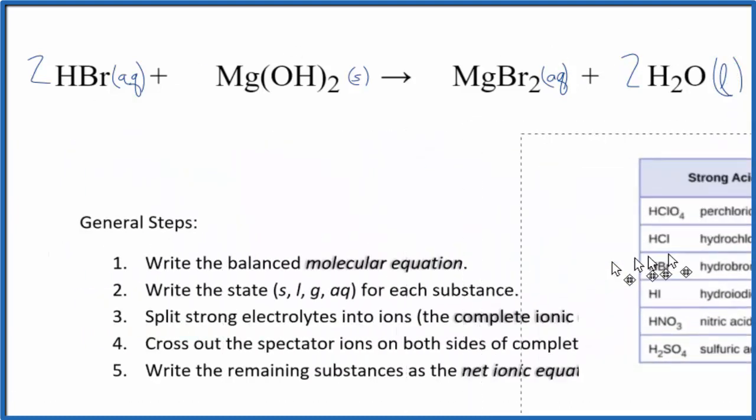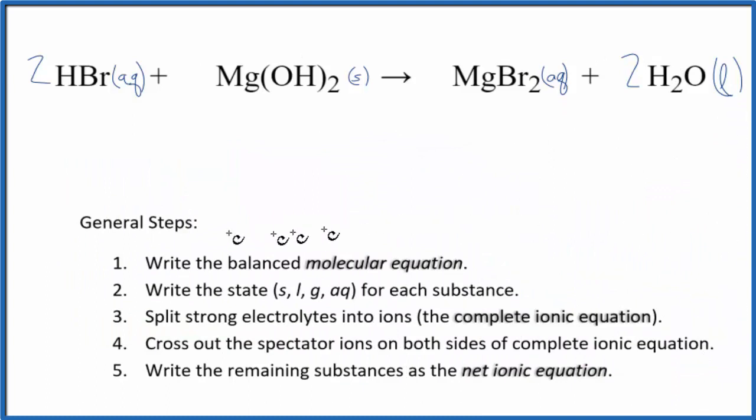Next, we're going to break the strong electrolytes into their ions. So HBr, that's a strong electrolyte. Hydrogen in group one, one plus. The bromide ion has a minus. So two hydrogen ions, H plus. I'll write aqueous at the end. I won't write that now. Plus two bromide ions, two Br minus.